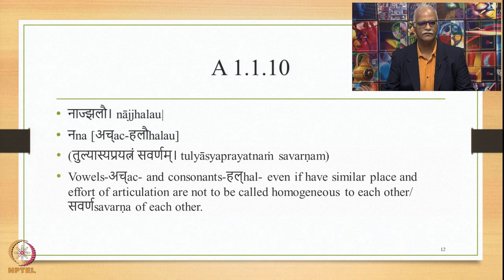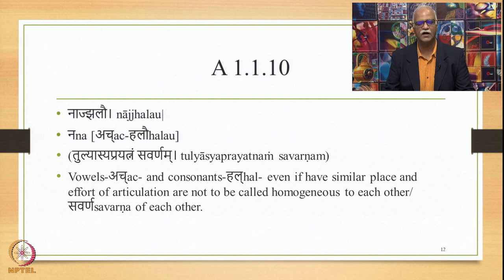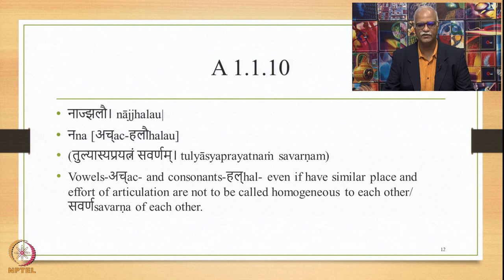Now let us look at 1.1.10. There are two words in this sutra: Na and Ajhalau, consisting of two components, Ach and Hal. Continuing from the earlier sutra, the meaning is: vowels (Ach) and consonants (Hal), even if they have similar place of articulation and similar effort of articulation, are not to be called homogeneous — they are not to be called Savarna of each other.